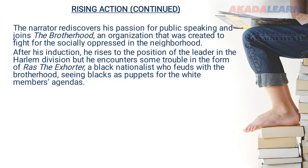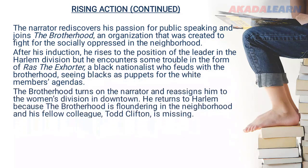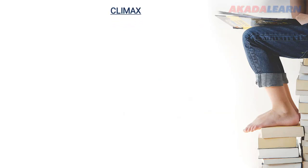Ras the Exhorter is a black nationalist who feels the Brotherhood is using blacks as puppets for the white members' agendas. The narrator questions why Ras's ideology is not truly for the betterment of blacks. The Brotherhood then turns on the narrator, reassigning him to the women's division downtown. He later returns to Harlem because the Brotherhood is slandering the neighborhood, and his colleague and friend Tod Clifton has gone missing.